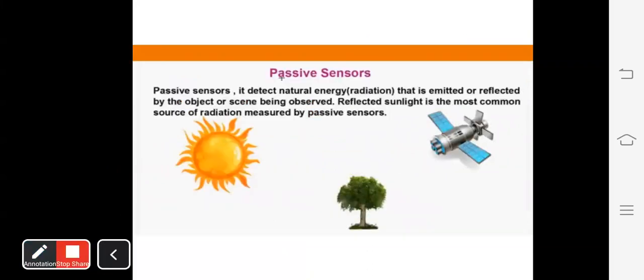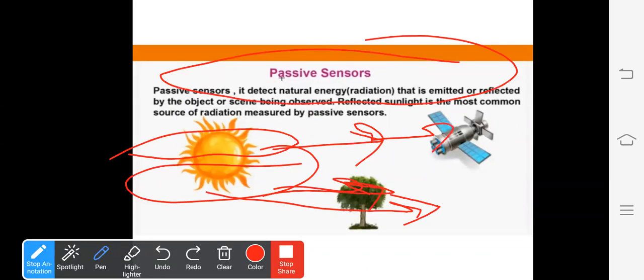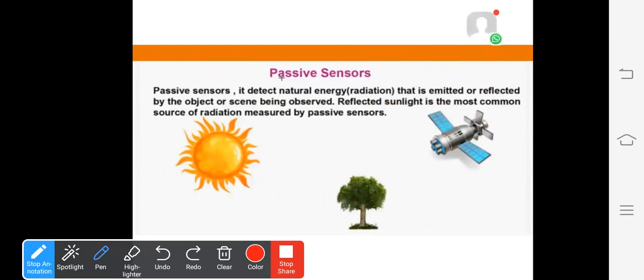Passive sensors detect natural energy radiation that is emitted or reflected by the object or the scene being observed. Sunlight is the most common source of radiation.